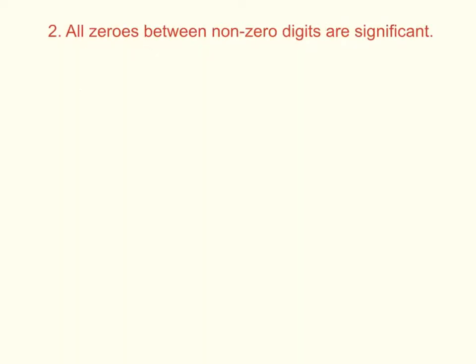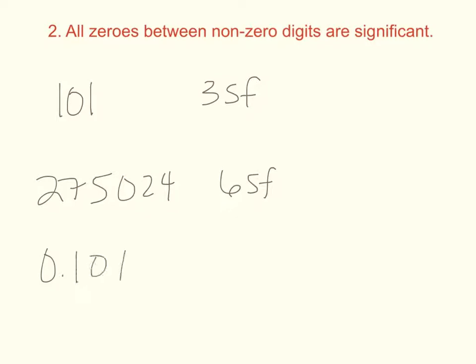If there are zeros between your non-zeros, those count as significant. Say the number 101, that has three sig figs. 272, 75,024 has six sig figs. 0.10123, that one has five sig figs.